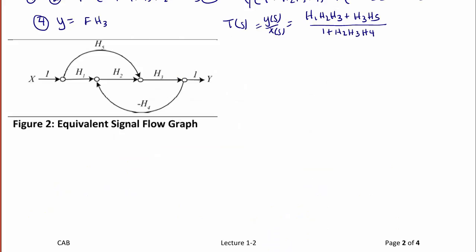So now let's use Mason's gain rule to simplify this signal flow graph. So the first thing we're going to do is identify the paths. Path 1 is equal to H1H2H3. Path 2 is equal to H3H5. Loop 1 is equal to negative H2H3H4, and that's actually the only loop we have.